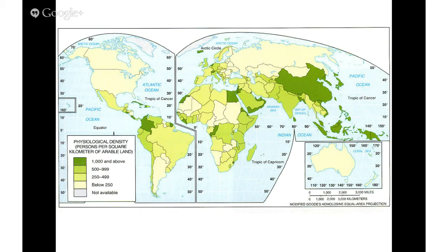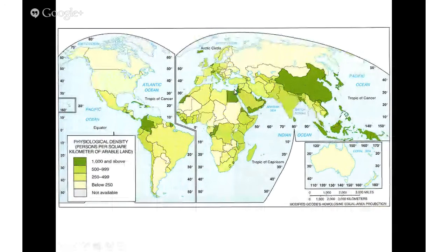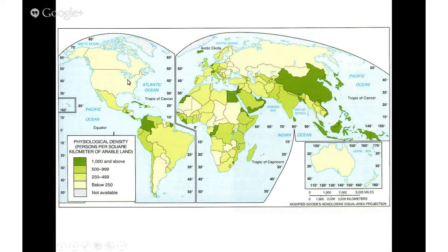Physiological density is a little more complex. Looking at the map, let's focus on two places — I'll go back and forth between physiological and arithmetic. You see Egypt, which has a very deep green. This means Egypt is more dependent on arable land usage to feed its population than, say, the United States. The number of people in Egypt needing arable farmland is greater than in the United States or Canada, which helps us understand the potential need for food imports.